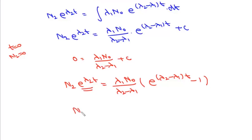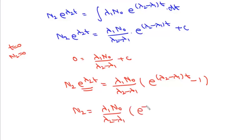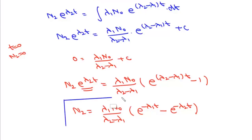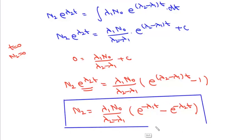The number of atoms of B at any time T is given by N2 equals λ1·N0 upon (λ2−λ1) times (e to the power minus λ1·T minus e to the power minus λ2·T), and that is the formula for the number of atoms of B at any time T.